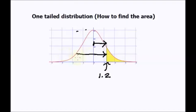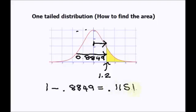So this entire area is 0.8849. Now I found this white area here but what I actually want is this yellow area. The area under a curve is equal to 1. So if I subtract this area which is 0.8849, that will give me this little tail here. And that equals 0.1151.